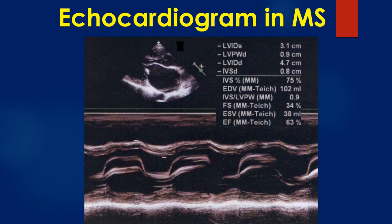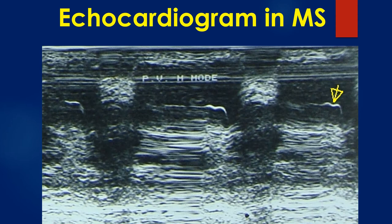Normally, the anterior mitral leaflet shows an M-shaped anterior movement and the posterior mitral leaflet shows a smaller W-shaped posterior movement. The upper panel shows the doming of the anterior mitral leaflet in diastole. Mitral stenosis with pulmonary hypertension is evidenced by the flat EF slope of the pulmonary valve M-mode echocardiogram and the shallow A wave marked by the arrow.